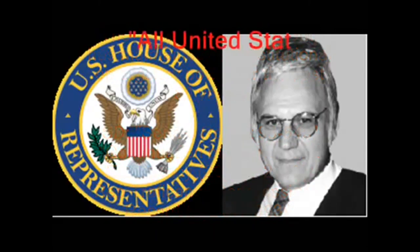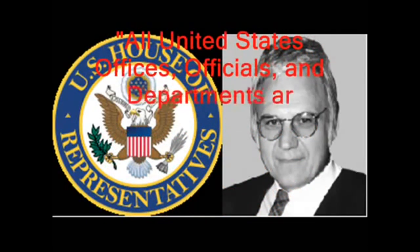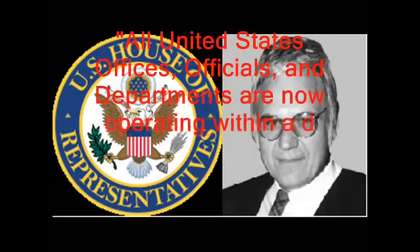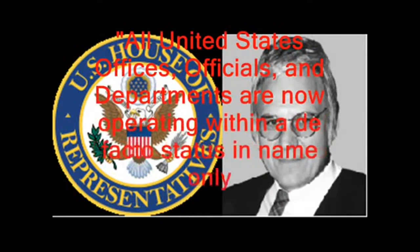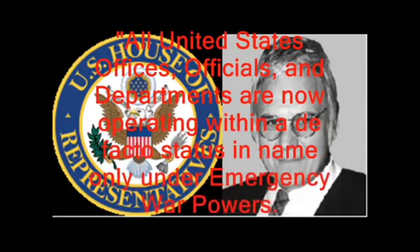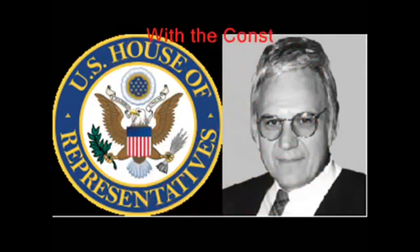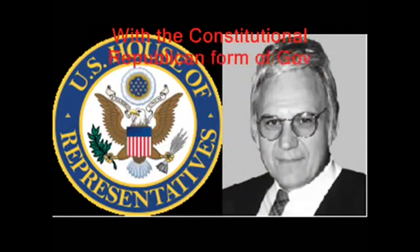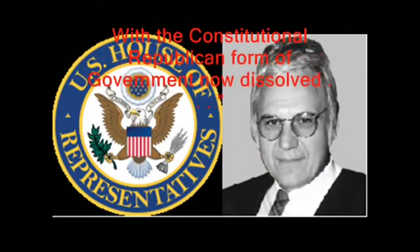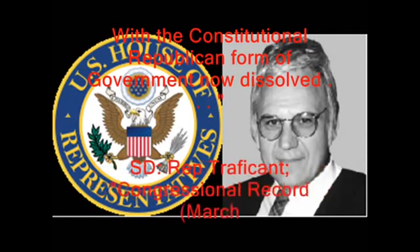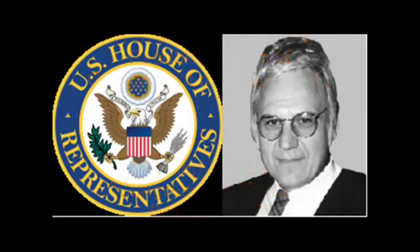"All United States offices, officials, and departments are now operating within a de facto status in name only under emergency war powers, with the constitutional Republican form of government now dissolved." Source document: Representative Traficant, Congressional Record, March 1993. Today, as has been demonstrated, the United States is just a corporate franchised network represented by their all-caps names, such as State of Ohio. Corporate statutes have replaced laws.